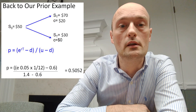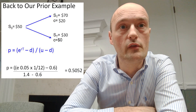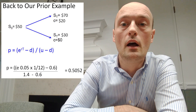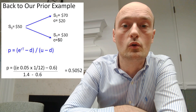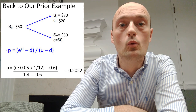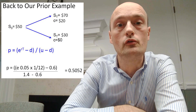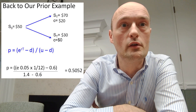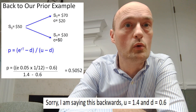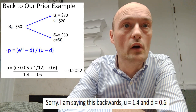The next step is to calculate p, the risk-neutral probability. Our formula for p is showing on the screen now: p equals e to the 0.05 — which is the five percent interest rate — times one over twelve, because this is for a holding period of one month, minus 0.6, all divided by 1.4 minus 0.6. So 0.6 and 1.4 are u and d: u is the amount the underlying moved up and d is the amount it moved down. 50 multiplied by 1.4 gives 70, and 50 multiplied by 0.6 gives 30.